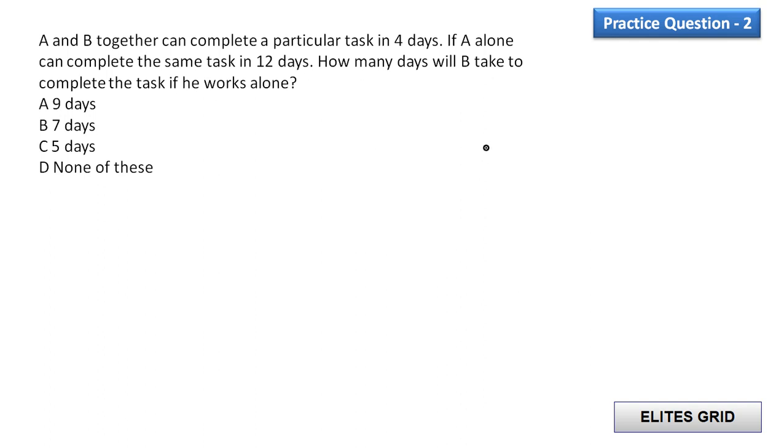So let's just assume that total number of units are 12. Now it is given that A and B together can complete a particular task in 4 days. So it means that A plus B can complete the task in 4 days, or we can say that in 1 day how many units will be covered?